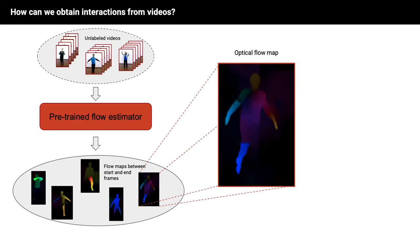And here is how we achieve this. We first use a pre-trained optical flow estimator to obtain the optical flow maps between the start and end frame of all our considered training videos. Based on these maps, and assuming the object to be the primary source of motion in the video,